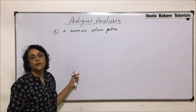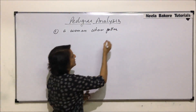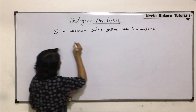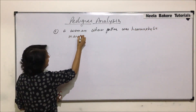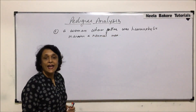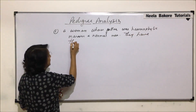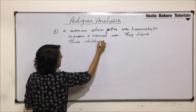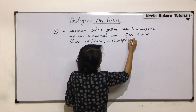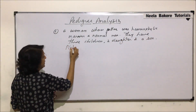We are talking of a sex-linked disorder, specifically hemophilia. A woman whose father was hemophilic marries a normal man, and they have three children — two daughters and a son. The question is: plot the pedigree.